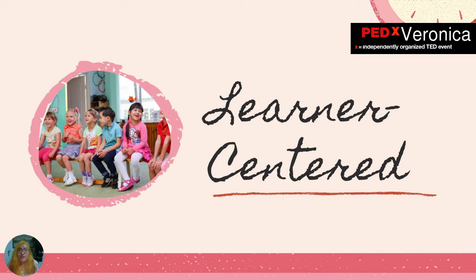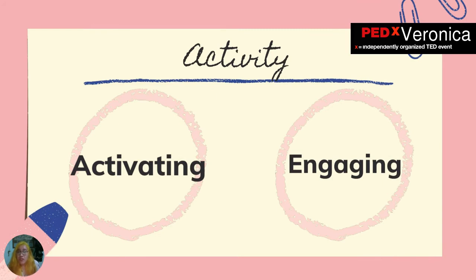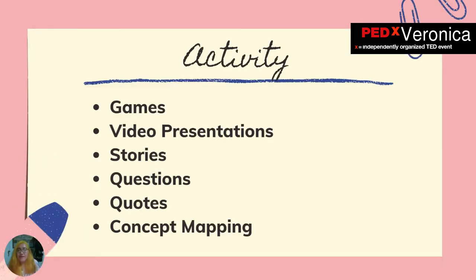This model is learner-centered, meaning teachers serve only as facilitators inside the classroom. In applying the first component — activity — in elementary education, the teacher must ensure the activity is activating and engaging. Since we are dealing with elementary students, the activity should activate their prior knowledge or schema. When learners find the activity relevant, it is easier to engage them. Teachers can use games, video presentations, stories, questions, quotes, and concept maps to trigger schema and establish connections.